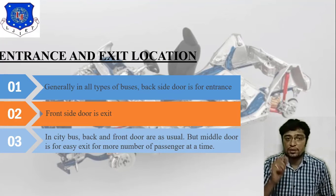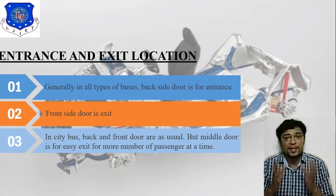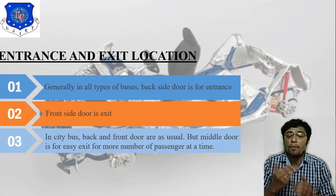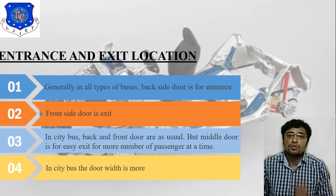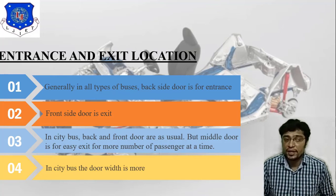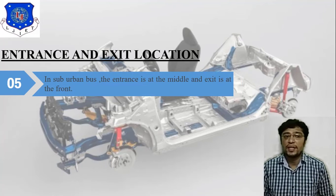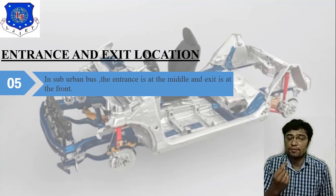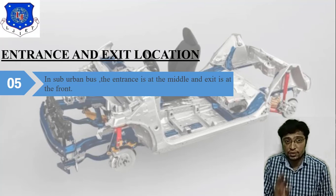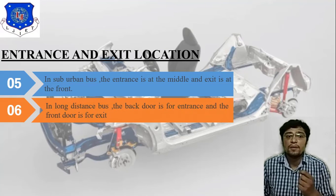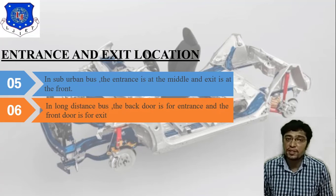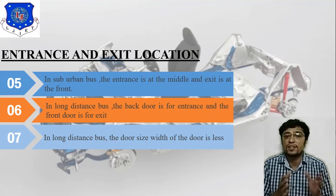Third point: for the city bus, back and front doors are as usual, but one extra middle door is available — the middle door is for easy exit for a large number of passengers at a time. Fourth point: in a city bus the door width is more. For the suburban bus, the entrance is at the middle and the exit is at the front. For long distance buses, the back door is for entrance and the front door is for exit, and the door width is less.